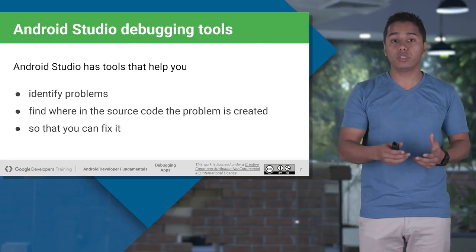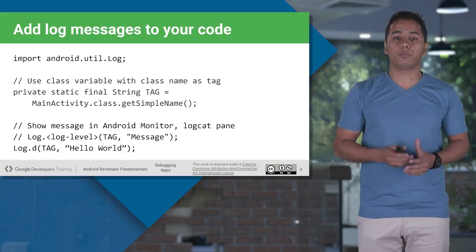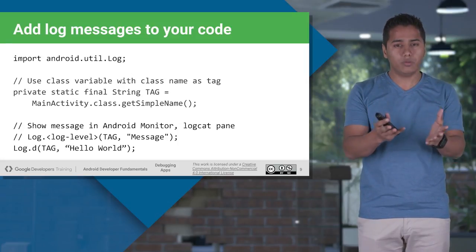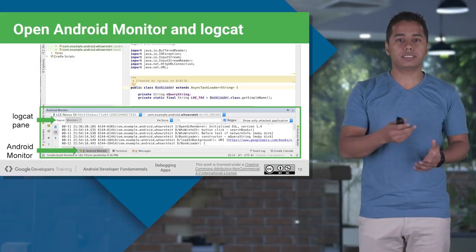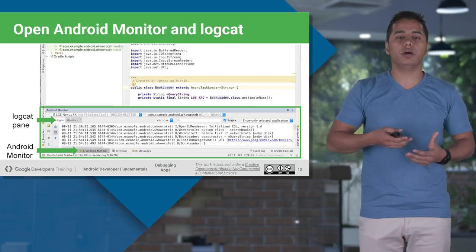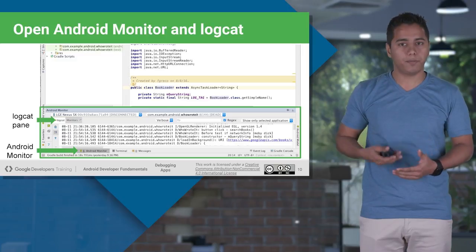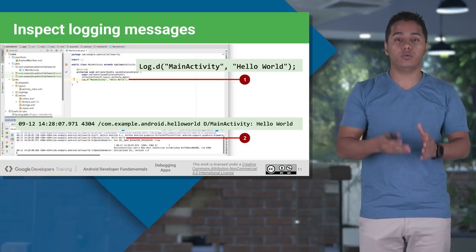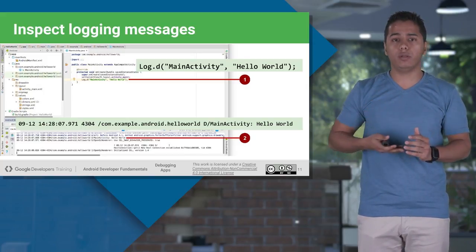The first debugging tool, which is very popular and which we have been using, is logcat. To put a logcat statement, you need to use the Log class. If you want a debug type of log, you use Log.d, then provide a tag name and your message — whatever message you want inside your logcat. Logcat is inside your Android Monitor, and it logs all the activities done inside your emulator or connected device. Wherever you put that log statement inside your activity, that log will be shown inside logcat.